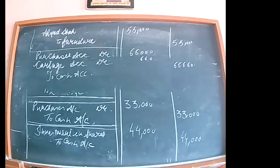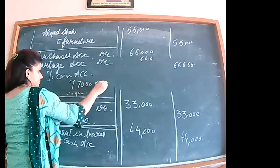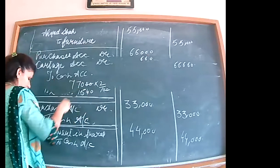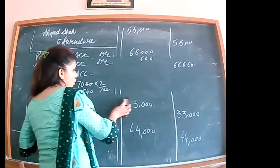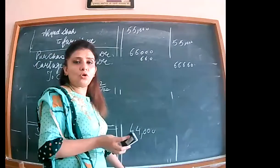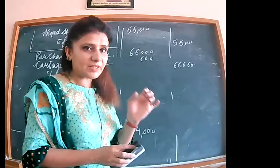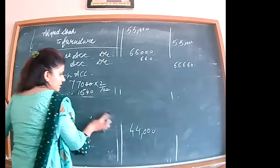Next: machinery purchased and cartage paid — cartage will be added to the cost of the asset. First calculate cartage: 2% of Rs. 77,000 = Rs. 1,540. This is to be added to the cost of machinery. When you buy an asset and pay cartage, it is added to the cost of the asset. But if you buy goods for sale and pay cartage, it is separately debited.